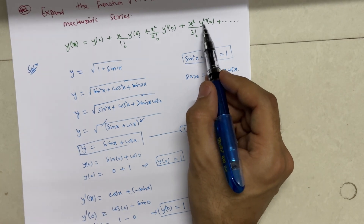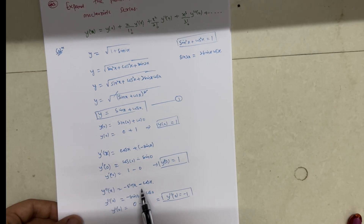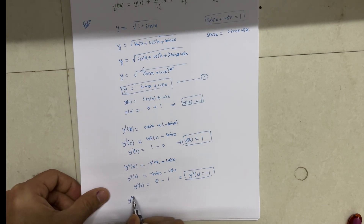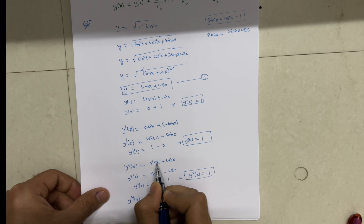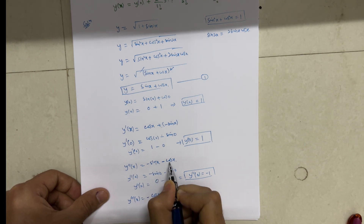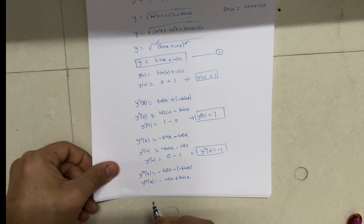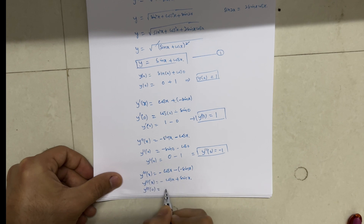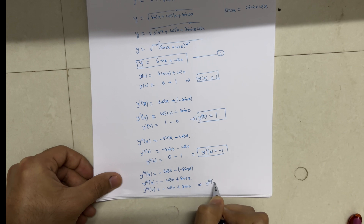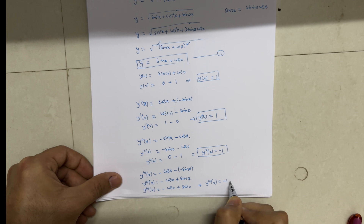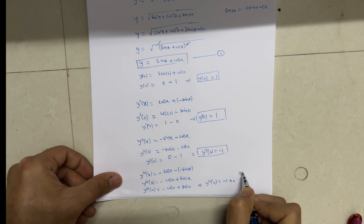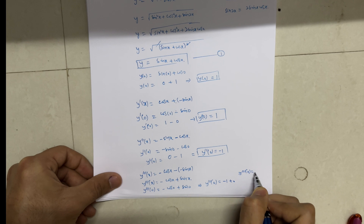Next we calculate y'''(0). Differentiating y''(x) = −sin x − cos x gives y'''(x) = −cos x + sin x. Substituting x = 0: y'''(0) = −cos 0 + sin 0 = −1 + 0 = −1. So y'''(0) = −1.